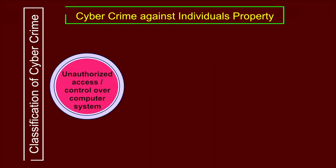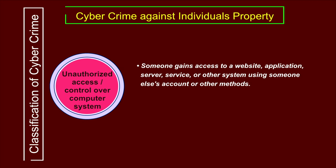The third category under individual property is unauthorized access or control over a computer system — someone gaining access to a website, application server, or other system using someone else's account or other methods. A notable example is ransomware, which captures and encrypts all documents on a computer system with a key so the user cannot access those files. To decrypt them, the attacker demands payment.